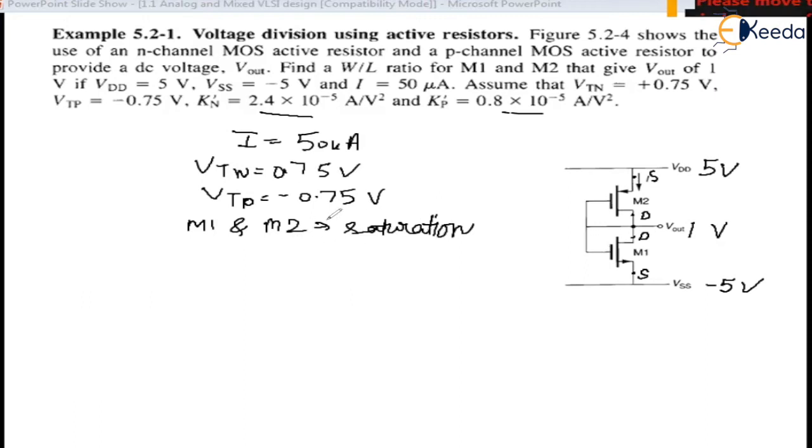So we need to find W/L. We know the saturation current is written as K_n' W/L (V_GS - V_T)^2. Simply substituting all the values and finding W/L ratio.